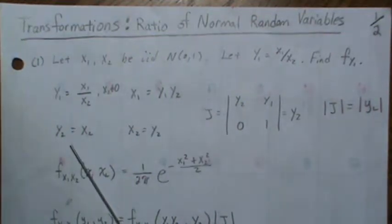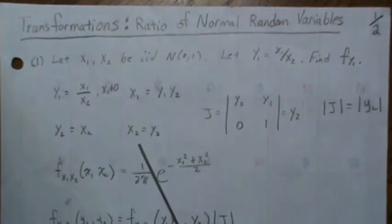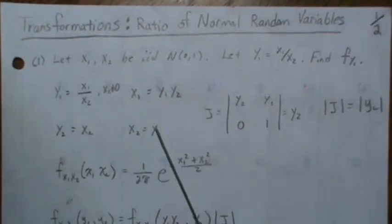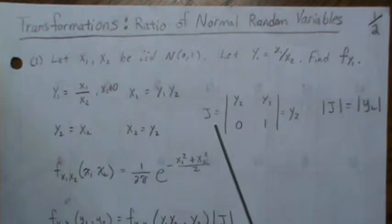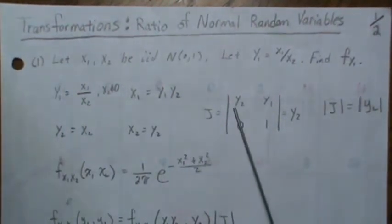In this example we're going to just let it be X2, and then when you back solve for X1 and X2 you get this.